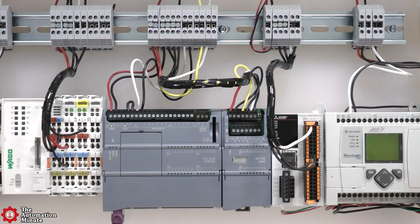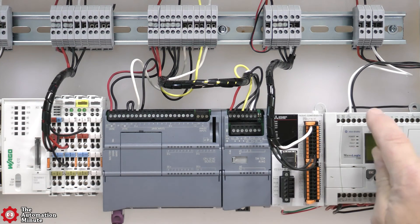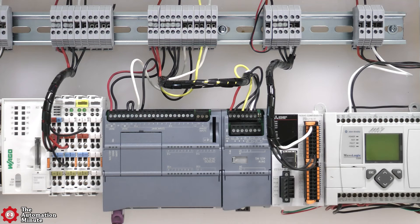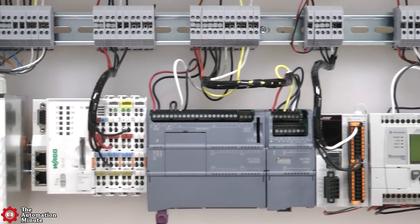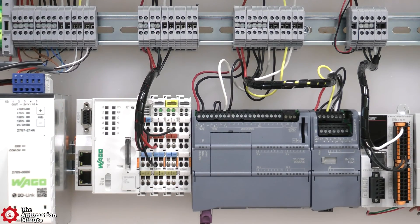Now to test it out, I connected the single PNP output to each of these four PLCs one at a time, wiring the sensor's black Q output to input one of the PLCs, and with the sensor's brown and blue wires going to plus and minus 24 volts DC.